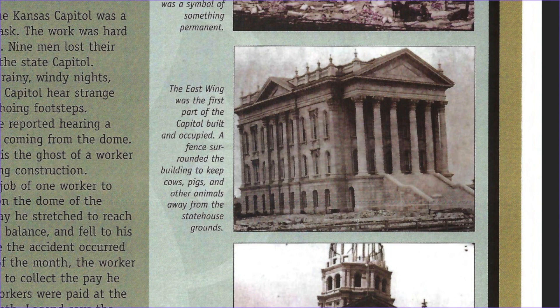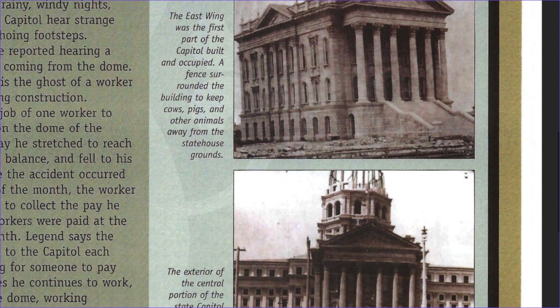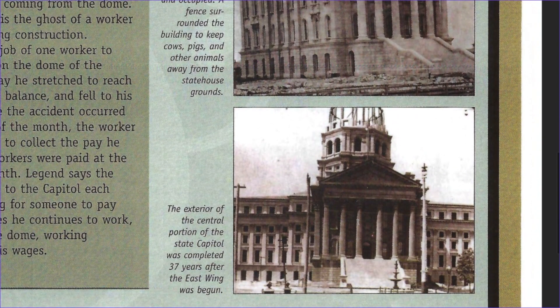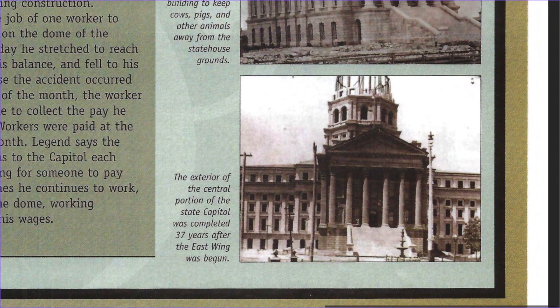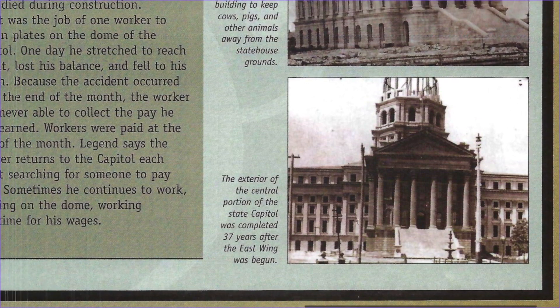The east wing was the first part of the capitol built and occupied. The fence surrounding the building was to keep cows, pigs, and other animals away from the state grounds. The exterior of the central portion of the capitol was completed 37 years after the east wing began.